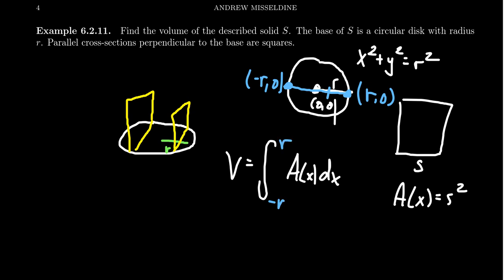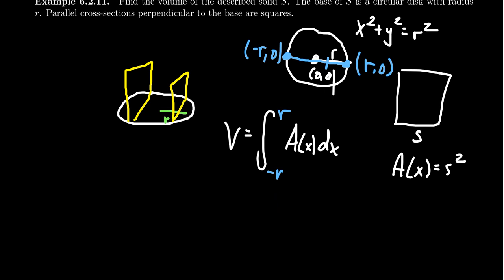So now we have to represent this value s in terms of the variable x. So thinking about our squares here, a typical cross section would look something like this, where s is the length of this side right here. Well, what we do know about this side length of the square is we do have this point right here, (x,y), where if we solve the equation of the circle in terms of y, we get y = √(r² - x²). The side length s is going to equal two times this y-coordinate.